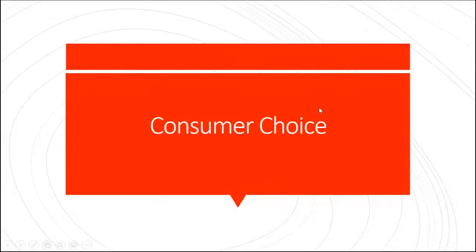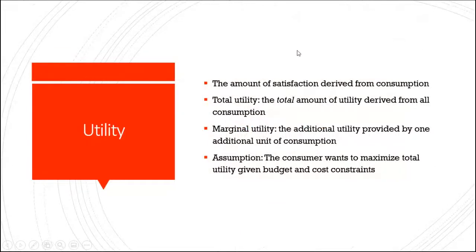Today we're going to set out a somewhat technical way of looking at consumer choice, but the idea behind it is quite simple. We're going to be talking primarily about utility — the amount of satisfaction derived from consumption. We're going to assume primarily that people want to maximize their total utility.